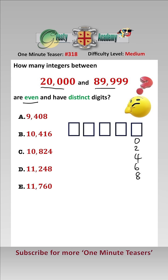And as it's between 20,000 and 89,999, then this number here has to be 2, 3, 4, 5, 6, 7, or 8.